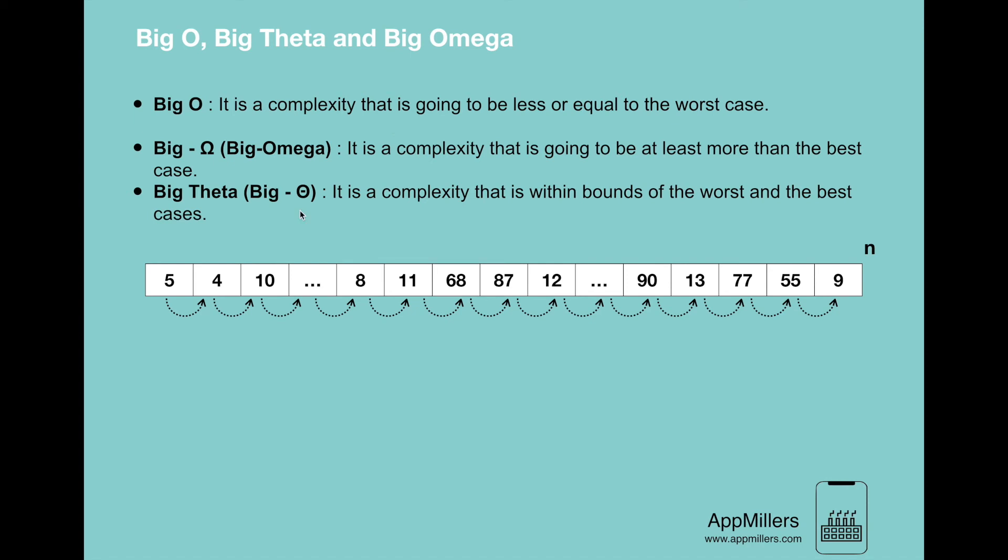In terms of Big Theta, it's a complexity that is within the bounds of worst and best cases. This means that if we have an algorithm with maximum execution time 10 seconds and minimum execution time 2 seconds, in terms of Big Theta, the average time will be 6 seconds for execution.